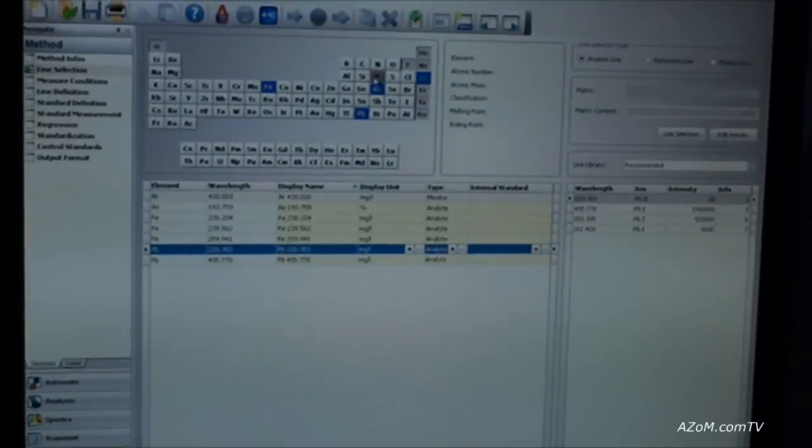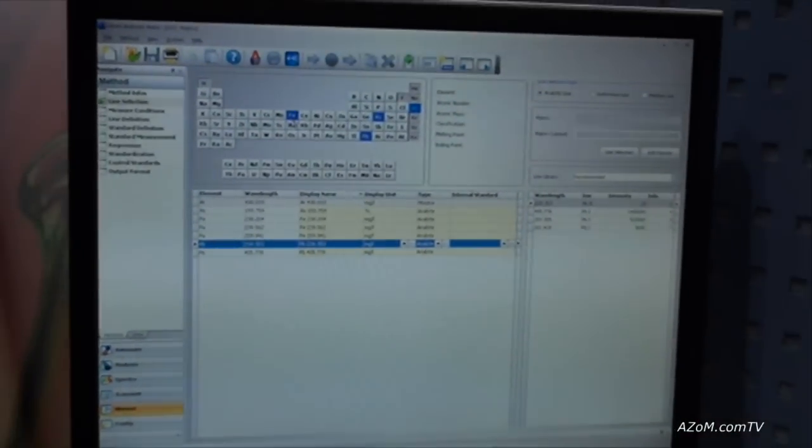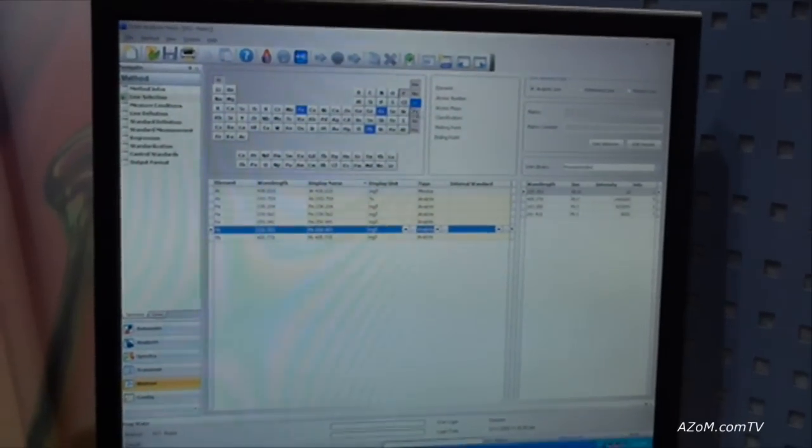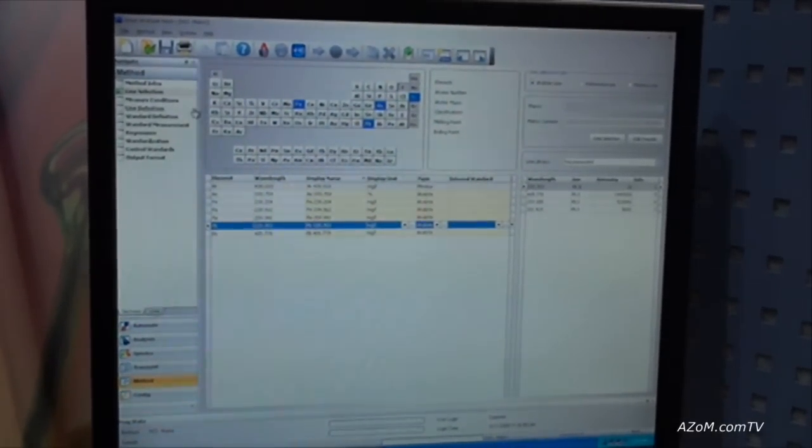Of course, all these elements in the periodic table are fair game, but this particular one is only doing iron, lead, and arsenic. And we're using argon as a monitor line to check the stability of the system long term.